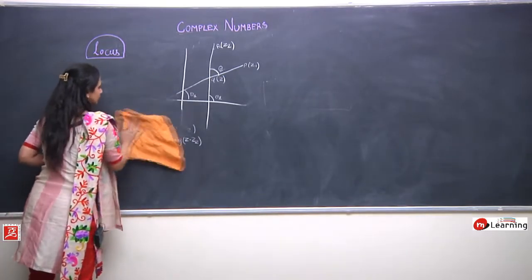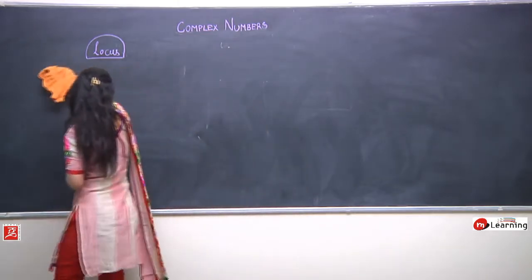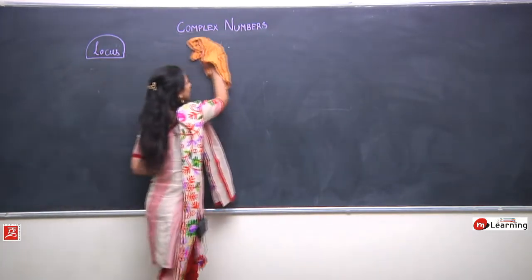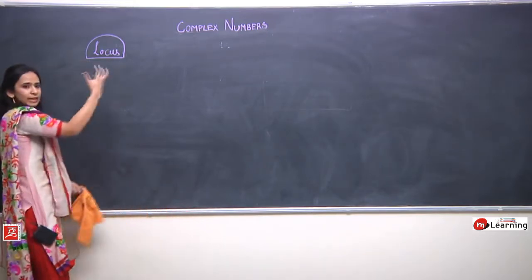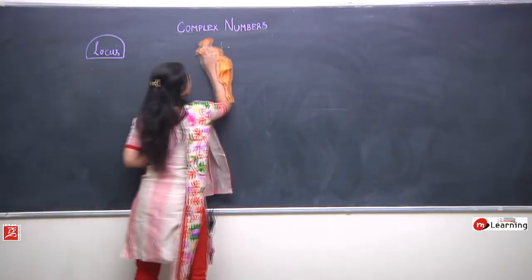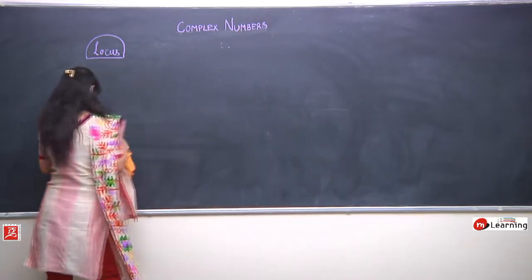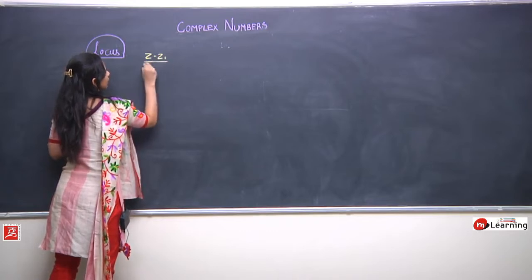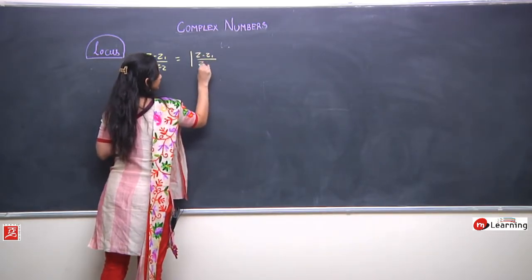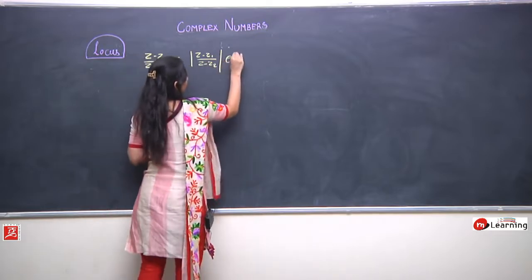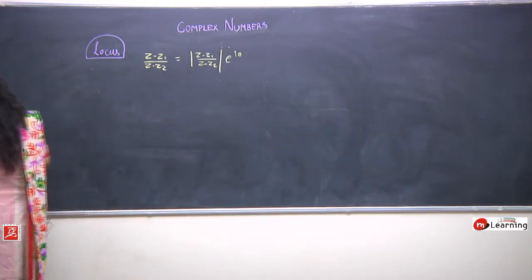Let us solve one question based upon this so that we can understand the application of this complete method and understand what we are basically trying to solve. What we derived is that (Z minus Z1)/(Z minus Z2) equals the modulus of (Z minus Z1)/(Z minus Z2) into e^(iθ), where theta is the angle between the vector Z minus Z1 and the vector Z minus Z2.